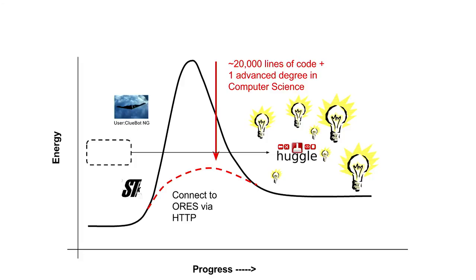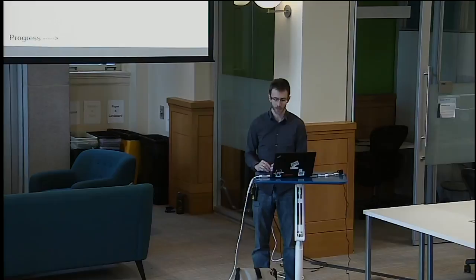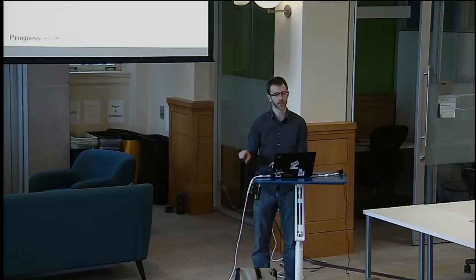We've already seen some tools moving over — Huggle is already using our scoring platform and making changes based on our predictions. There are 20 volunteer-developed tools using this prediction, three major Wikimedia product initiatives, and some really cool data science work. We've seen a ton of progress, with a lot of it moving in the direction of newcomer socialization.